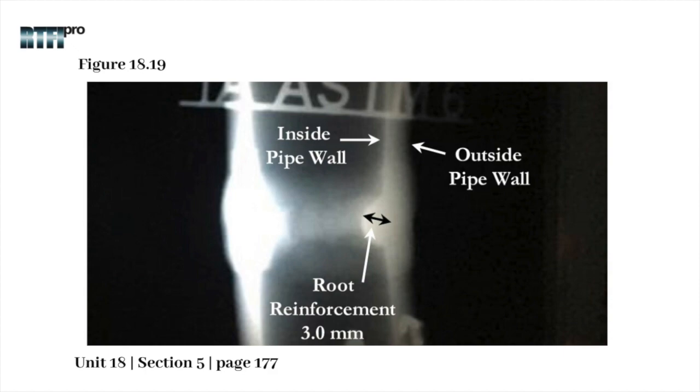As shown in the radiograph, at the right of the A location, reinforcement is shown protruding beyond the base metal. With the double wall exposure, double wall view exposure technique, one can verify the wall thickness by measuring the distance from the outside to the inside wall.